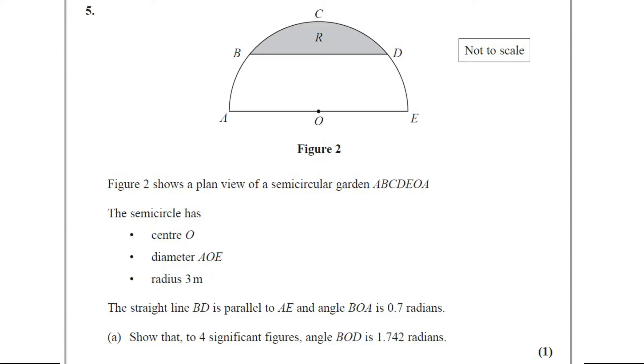The straight line BD is parallel to AE and angle BOA is 0.7 radians. Part A: show that to four significant figures, angle BOD is 1.742 radians.